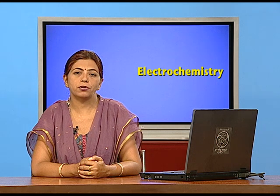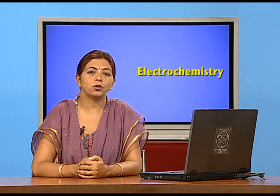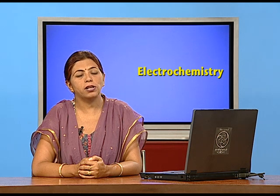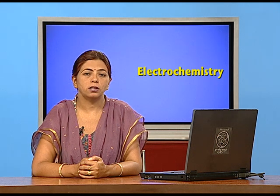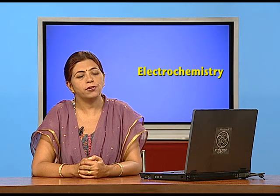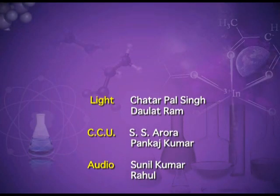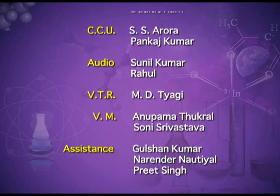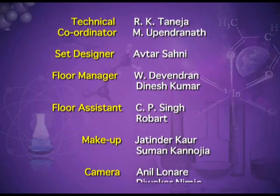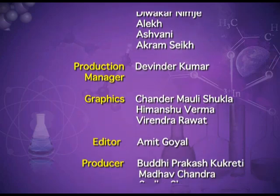Dear children, I have explained the Nernst equation to calculate the electrode potential at any concentration, and I have explained the various types of conductors — the metallic conductors and electrolytic conductors. I hope everything is clear to you. Thank you.